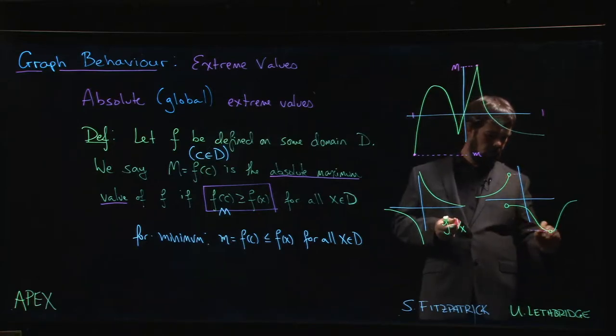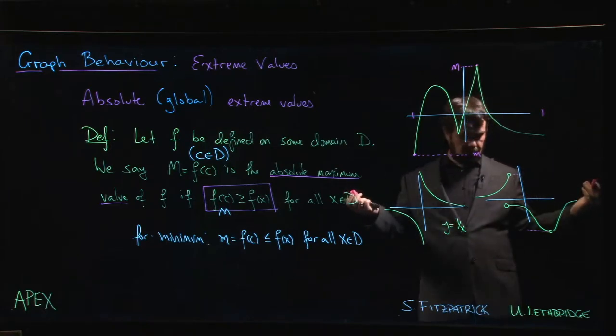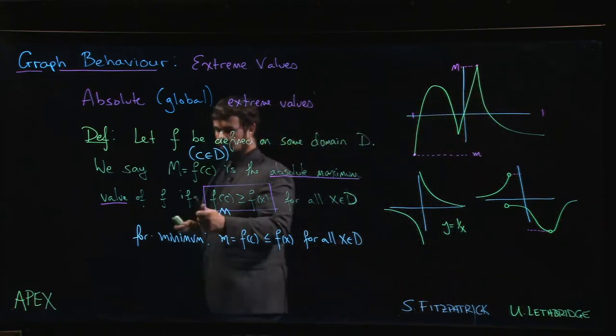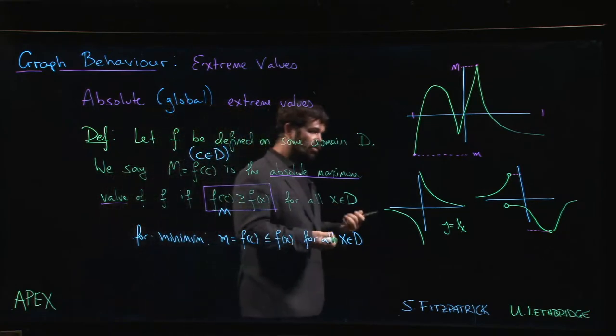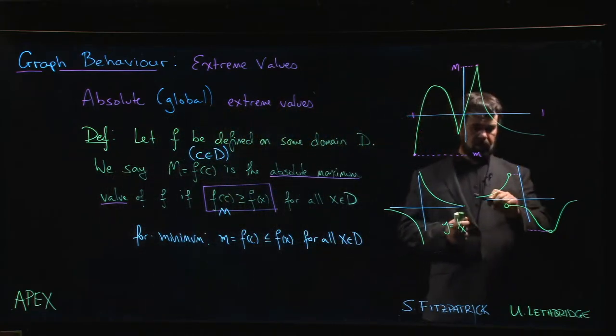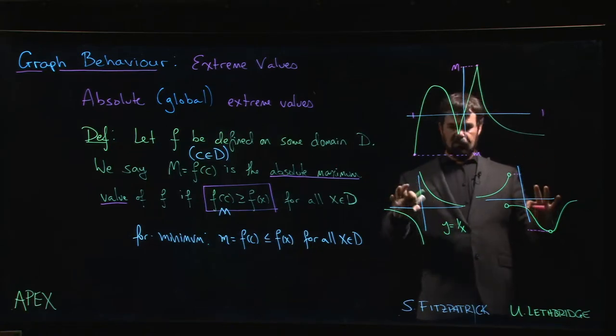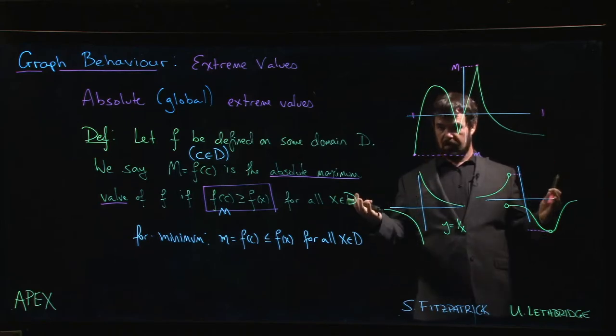There's one down here that's smaller than all possible y values for our function. But they're not actually attained by the function. We can't say that those values are given by f of c for some c in the domain. We never actually reach that value. We get closer and closer and closer to that y value, but we never actually get there. So these are situations where we would not say that there is a maximum or a minimum. We might have them, we might not.